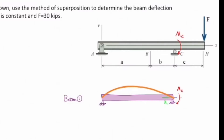Beam number one would be subjected to an internal moment MC. How much would MC be? That would be force times distance — F times C. Because of this moment and the resulting slope at point C, there would be indirect deformation at point H, which I will call delta H1. So delta H1 is the indirect deformation. Now let me consider the second beam, the cantilever beam. The right part of this beam is not a straight line anymore, because there is a moment on that part, causing deflection I will call delta H2. Total deflection would be delta H1 plus delta H2.